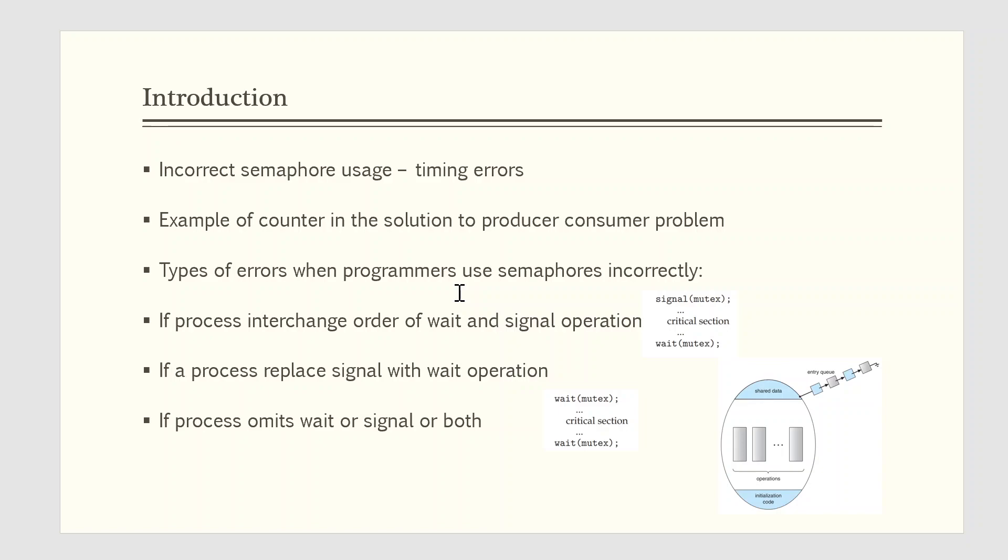Suppose that a process interchanges the order in which wait and signal operations on the semaphore mutex are executed, resulting in the following execution: signal of mutex followed by the critical section followed by wait of mutex. In this situation, several processes may be executing in their critical sections simultaneously, violating the mutual exclusion requirement. This error may be discovered only if several processes are simultaneously active in their critical sections.